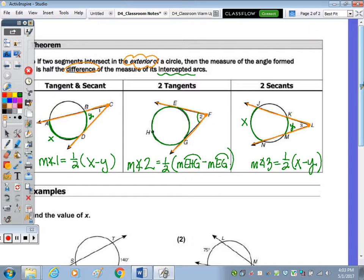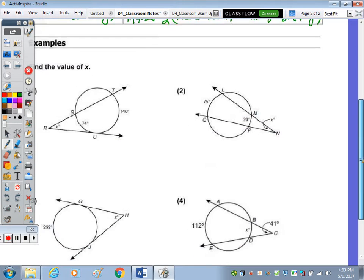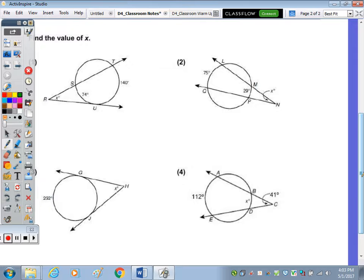So to finish up for the notes, we have four examples which we're finding X. So in the first example, we have X here at angle R, so tracing along this secant as it touches the circle twice.